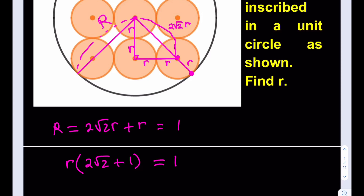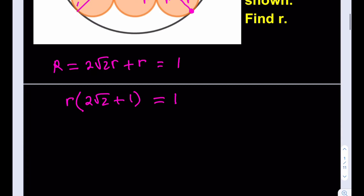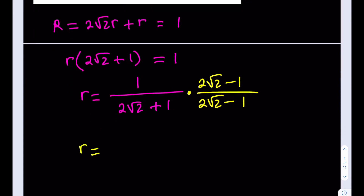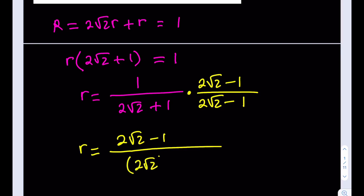Notice that the small r is what we're looking for — the radius of the small circle. I'm going to divide both sides by (2√2 + 1). To make this look nicer, we rationalize the denominator using the conjugate expression 2√2 minus 1. Multiplying gives R equals (2√2 − 1) in the numerator, and in the denominator we get the difference of squares: (2√2)² minus 1².